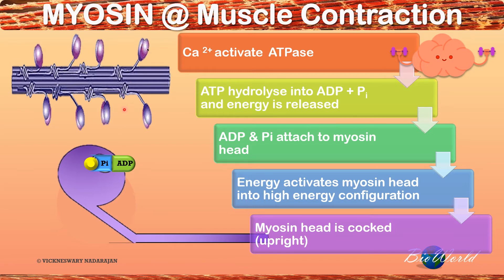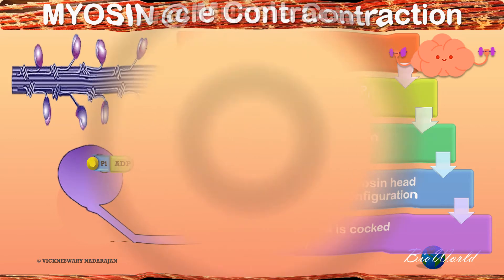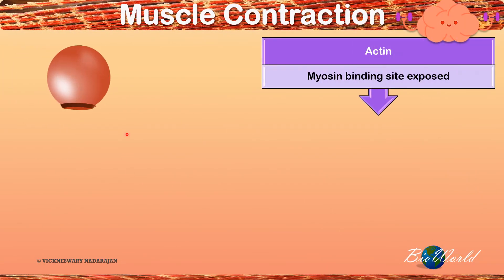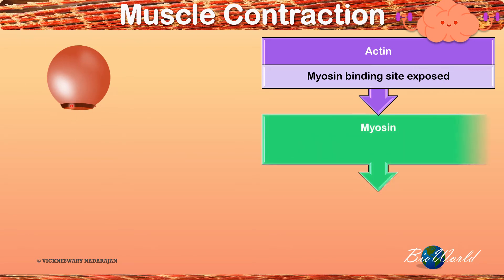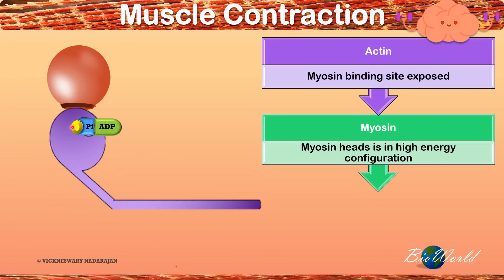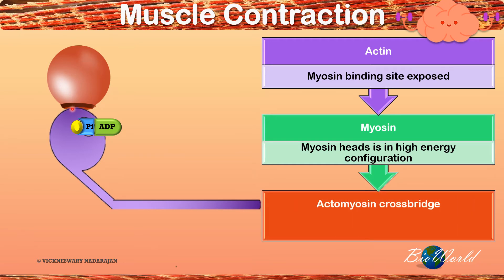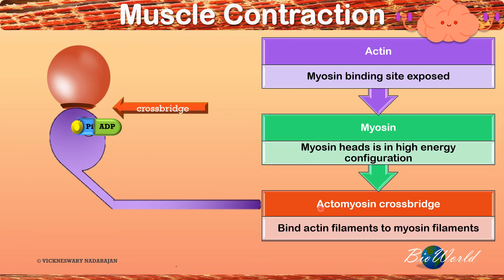Once both the actin molecule and the myosin molecule have been activated by the presence of the calcium ion, the actin molecule has an exposed myosin binding site and the myosin molecule is in high energy configuration. What happens is the myosin head attaches to the myosin binding site on the actin molecule. This binding forms a cross bridge — we call it an actomyosin cross bridge because it's half actin and half myosin. This actomyosin cross bridge binds actin filaments to the myosin filaments temporarily.